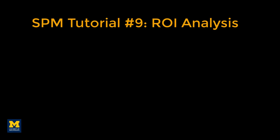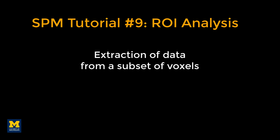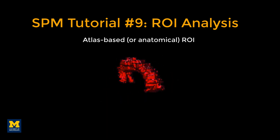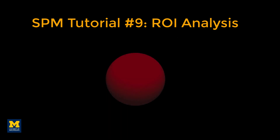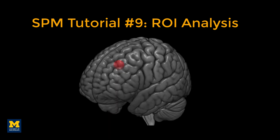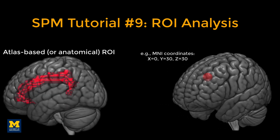A region of interest, or ROI analysis, is a method of extracting data from a subset of voxels, also called a mask. One way to create a mask is to use an atlas, or a map that partitions the brain into anatomically distinct regions. Another technique is called the spherical ROI approach, in which a sphere of a given diameter is centered at a triplet of specified x, y, and z coordinates. These coordinates are often based on the peak activation of another study that uses the same or a similar experimental design. In this tutorial, you will learn how to do both types of region of interest analysis.